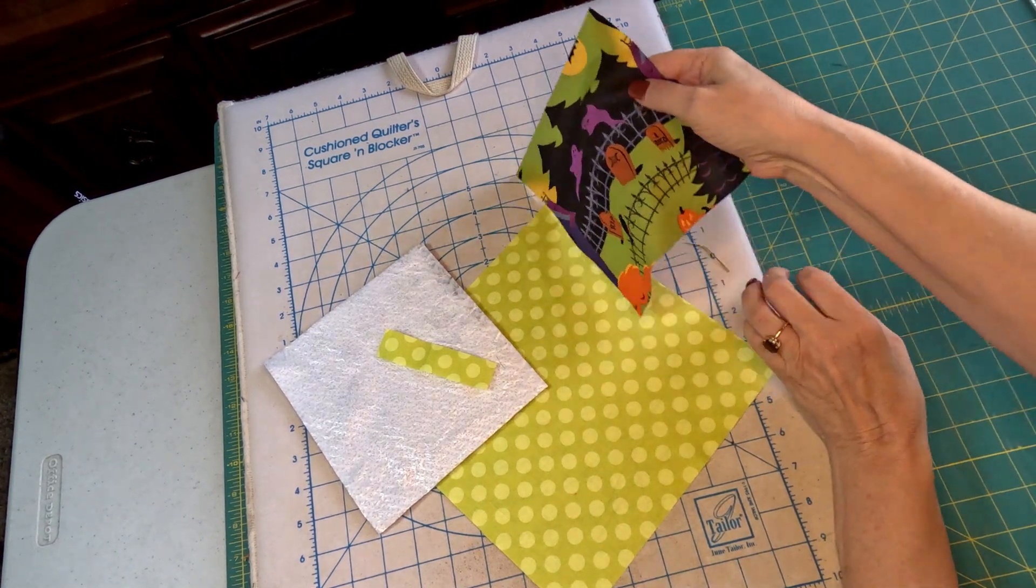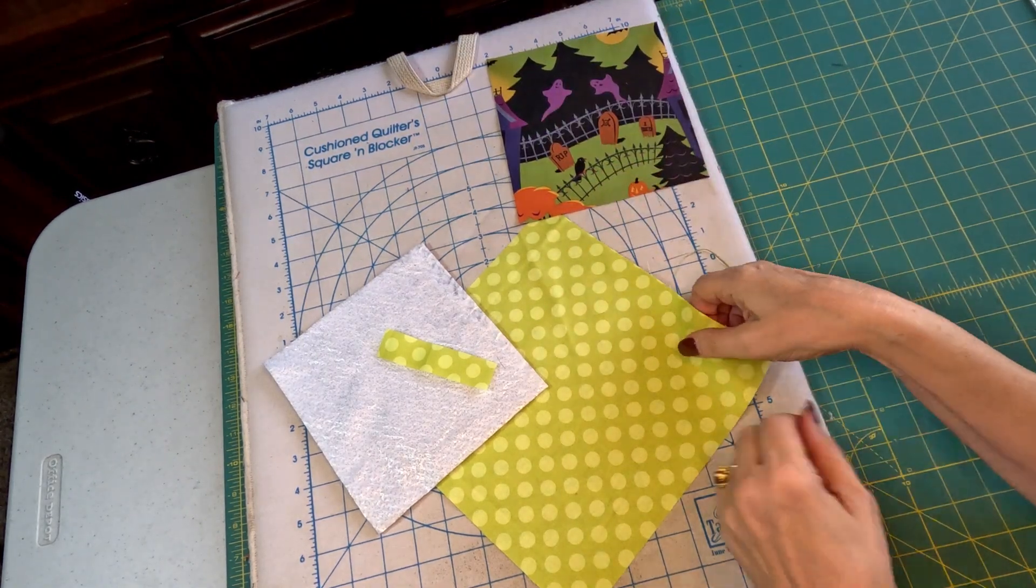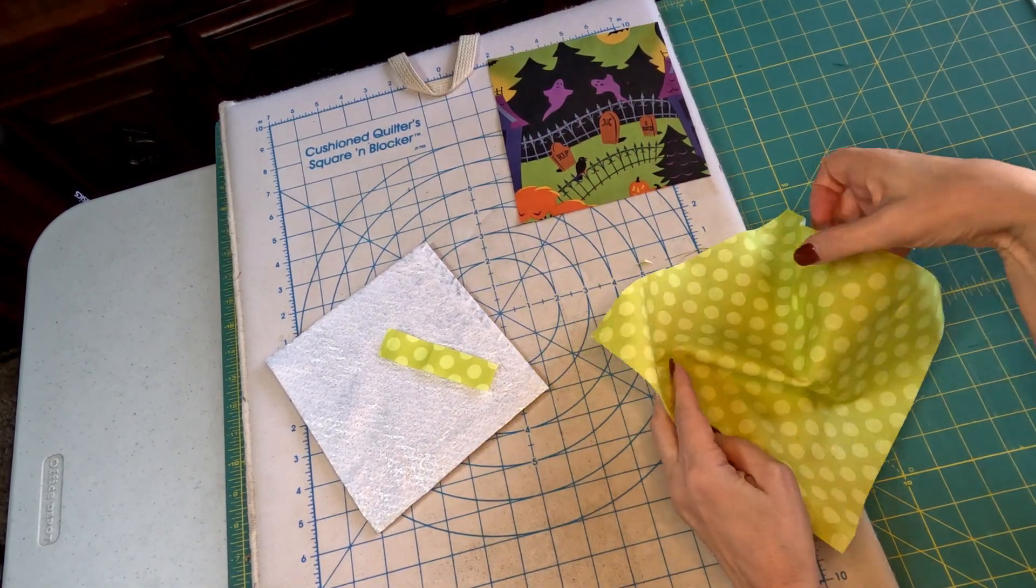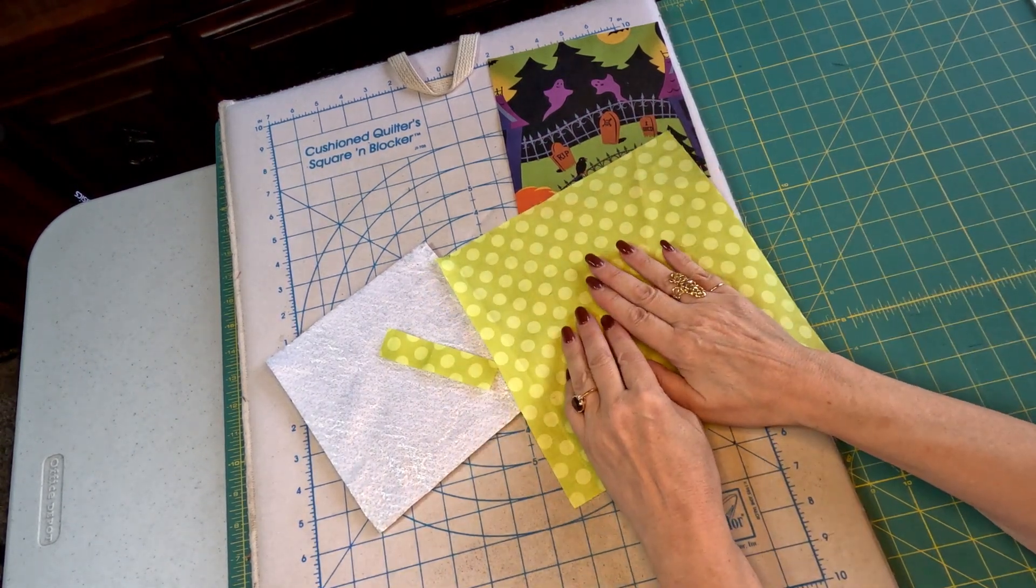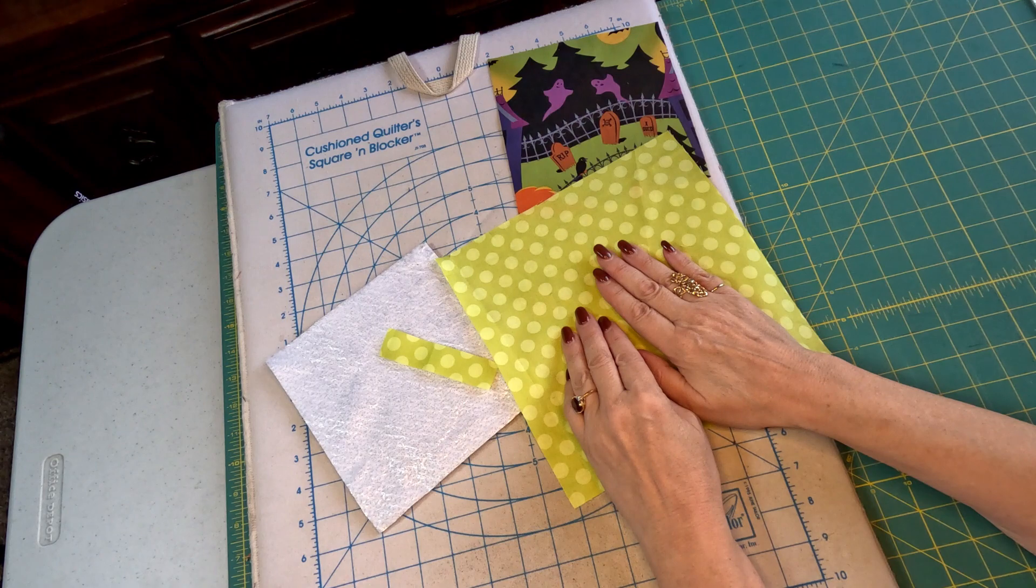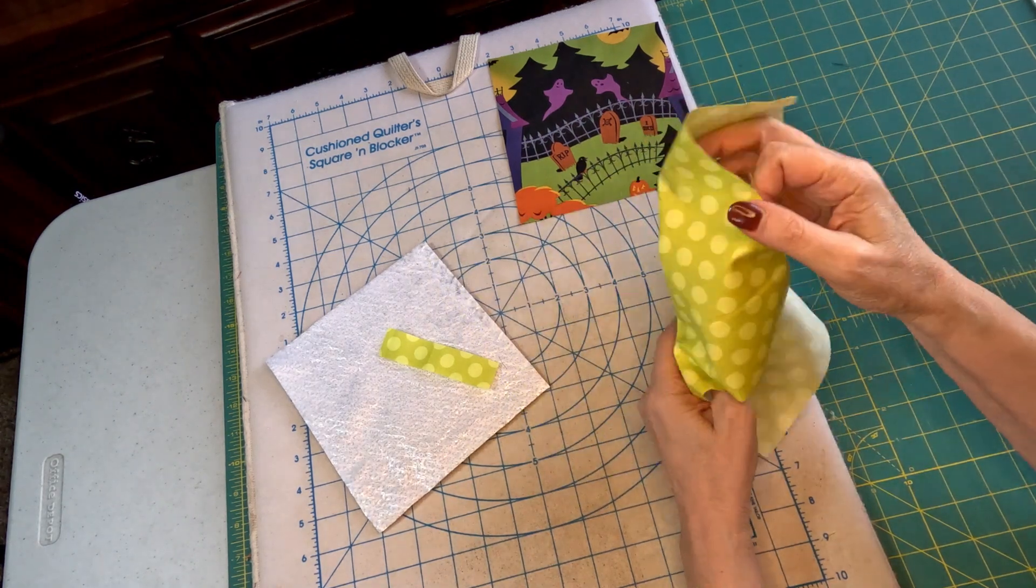So, you'll need your fussy cut picture, 7 inch square. Then we want a 9 and 3 quarters inch square, that's going to be our backing.